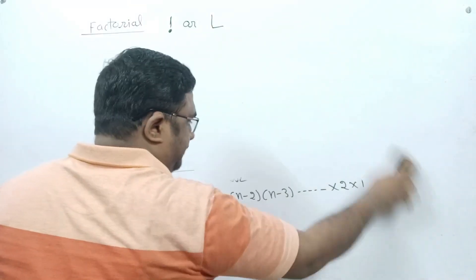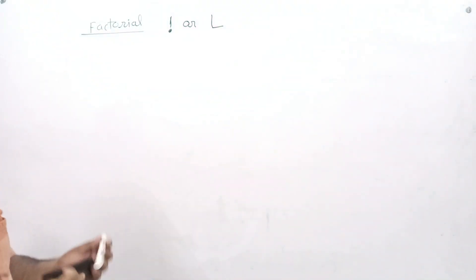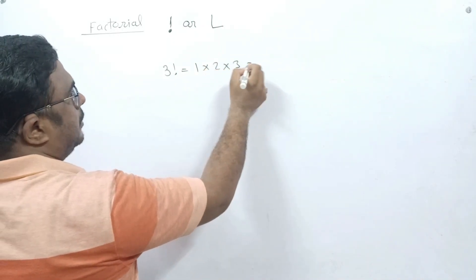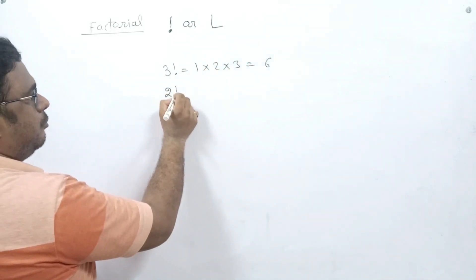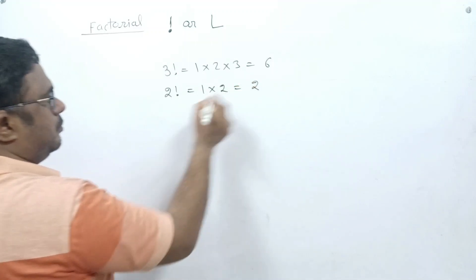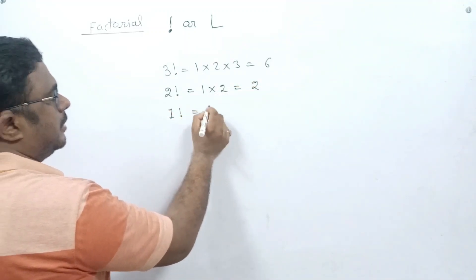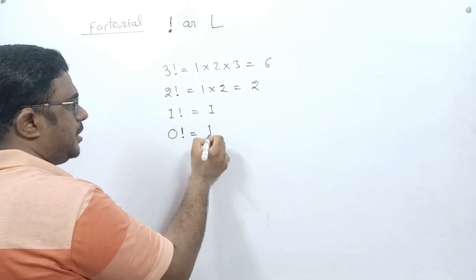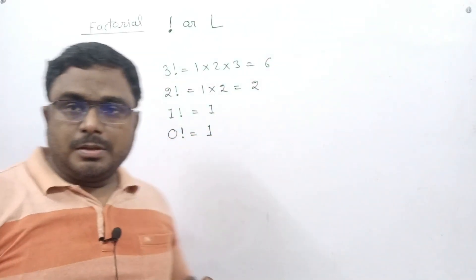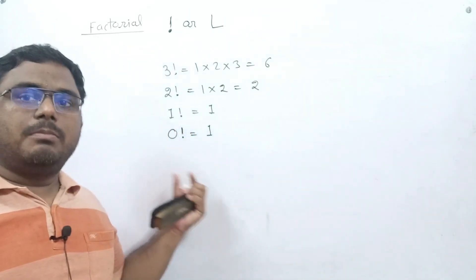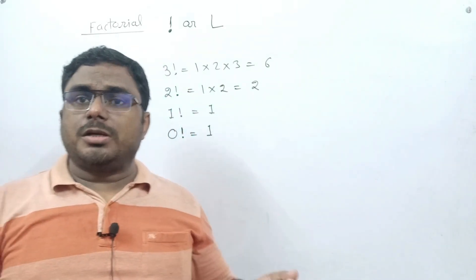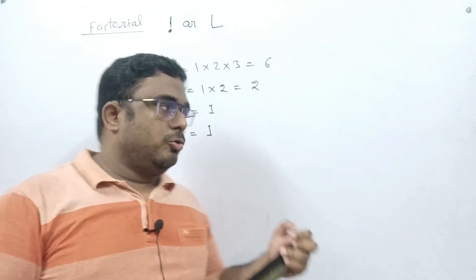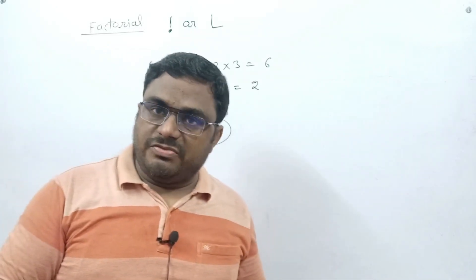Let us see once again. 3 factorial = 1 × 2 × 3 = 6. 2 factorial = 1 × 2 = 2. 1 factorial = 1. And 0 factorial is also equal to 1. At this moment you have to remember this value: 0! = 1. The question arises why 0 factorial equals 1, and we will do the proof of this at the end of this video.